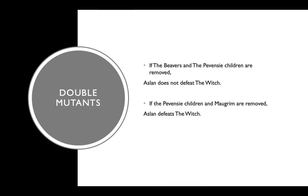For double mutants: for the first one, if the beavers and the Pevensey children are removed, Aslan does not defeat the witch, because the Pevensey children cannot block Mogrim. And if the Pevensey children and Mogrim are removed, Aslan defeats the witch, because Mogrim cannot block Aslan, so the witch is defeated.